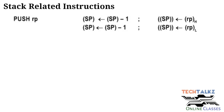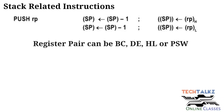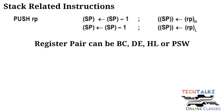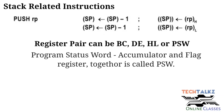The next instruction is PUSH register pair. The content of the register pair is pushed to the stack. Register pairs that can be used are BC, DE, HL, and Program Status Word (PSW). PSW refers to the accumulator and flag register together, called the Program Status Word.